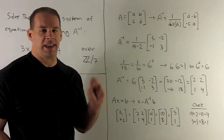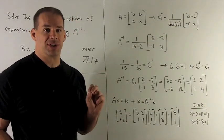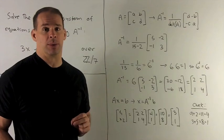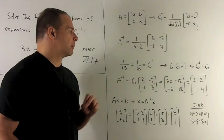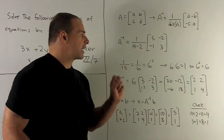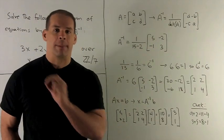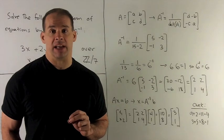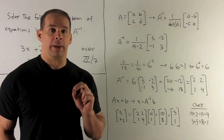I'm going to take each entry and get it to a number between 0 and 6 by adding or subtracting multiples of 7. So we wind up with the matrix [2, 2; 1, 4]. And if I wanted to check, I would take that matrix, multiply it by our original matrix, and make sure the identity comes out.